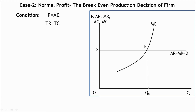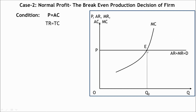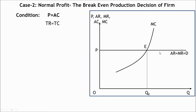Equilibrium output level is Q0. To show the normal profit, let us introduce the average cost curve in such a way that its minimum point lies on the marginal cost curve, but it touches the price line. That is, the average cost curve will be tangent to the price line, and its minimum point lies on the marginal cost curve.